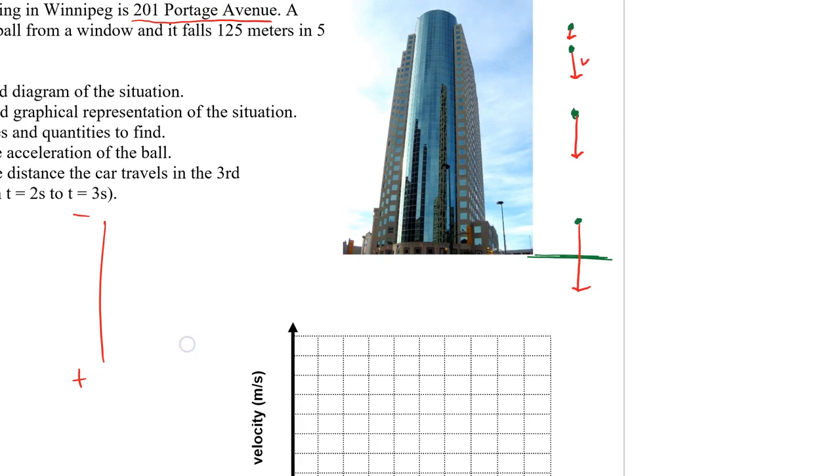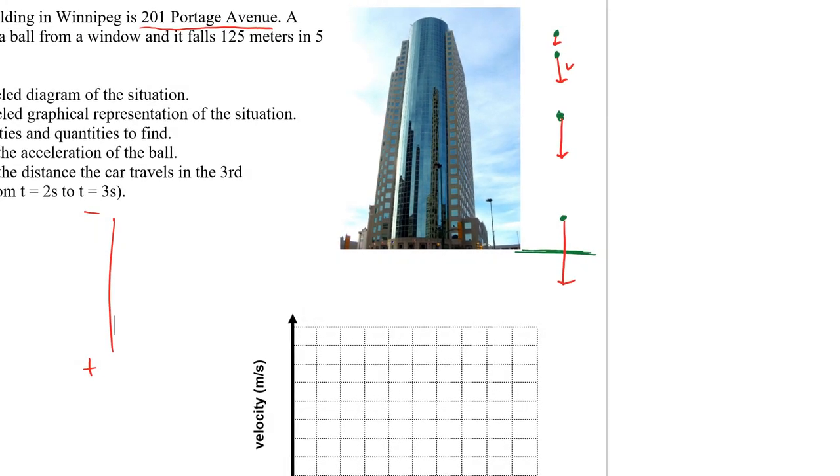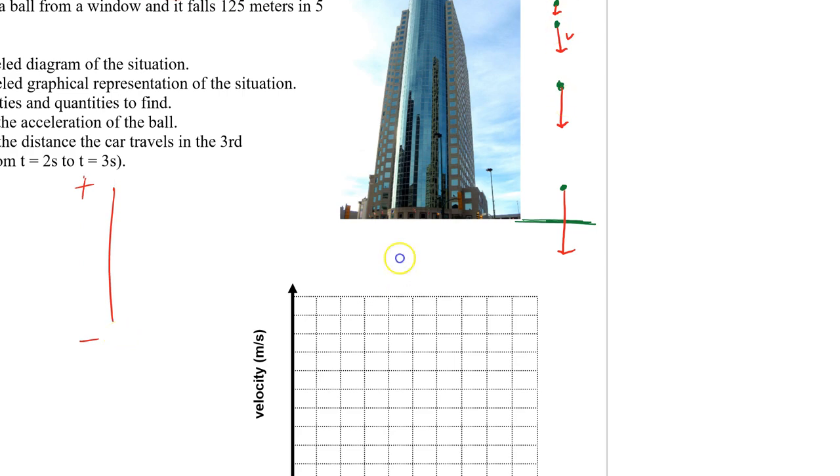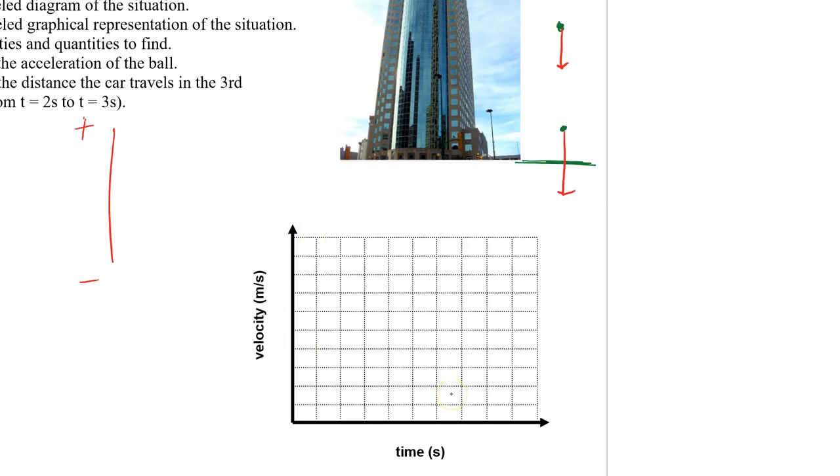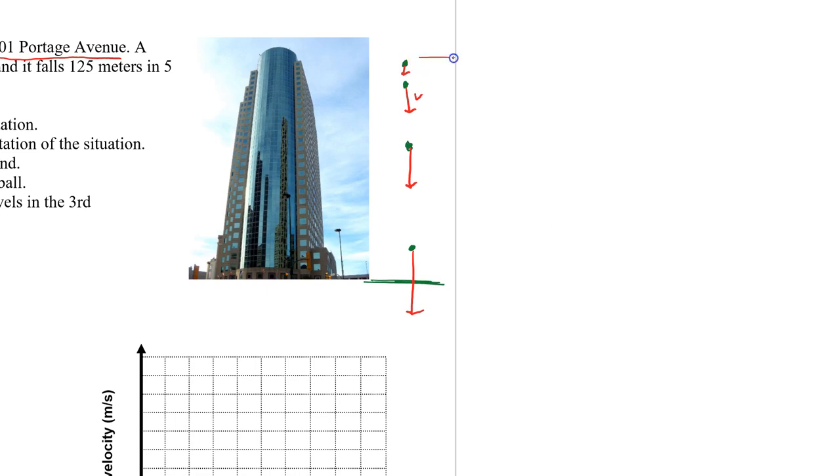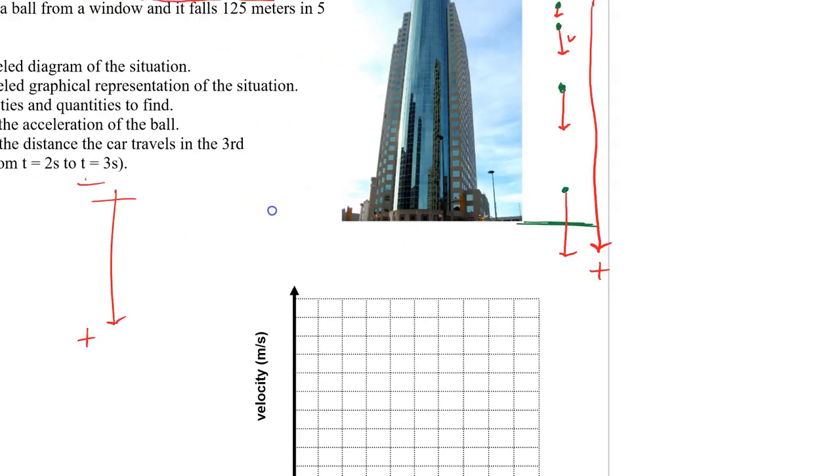So in this question, the ball is falling downwards. If we go with the regular way and say that up is positive and down is negative, then we would have negative velocity the whole time. It's a little inconvenient because there's already a VT graph made for us and it looks like it's set up for positive velocity. So let's switch this around and say that down is positive and up is negative. Here would be the origin, and then this way is positive. So the velocity is getting increasingly positive.